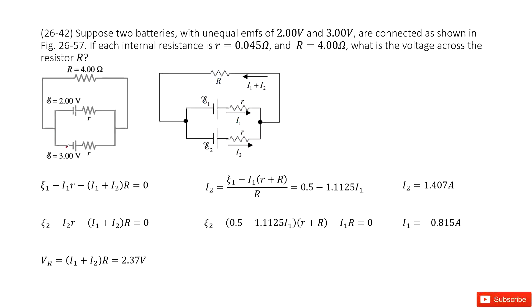We have two batteries: we can call them epsilon 1 and epsilon 2. We have resistances: resistor R, small r, and capital R. Now, we need to find what is the voltage across the resistance R, this part.